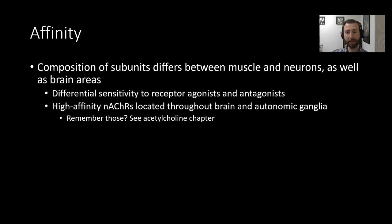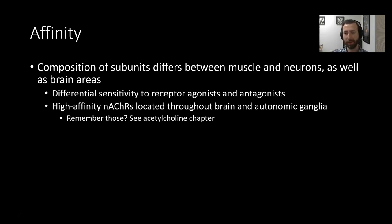Based on these subunits, the individual receptor will have differential sensitivity to different agonists and antagonists. High affinity receptors are located throughout the brain and autonomic ganglia. If you don't remember much about the distribution of cholinergic neurons or their relationship to the autonomic nervous system, you might want to go back to the acetylcholine chapter and take a look at that.